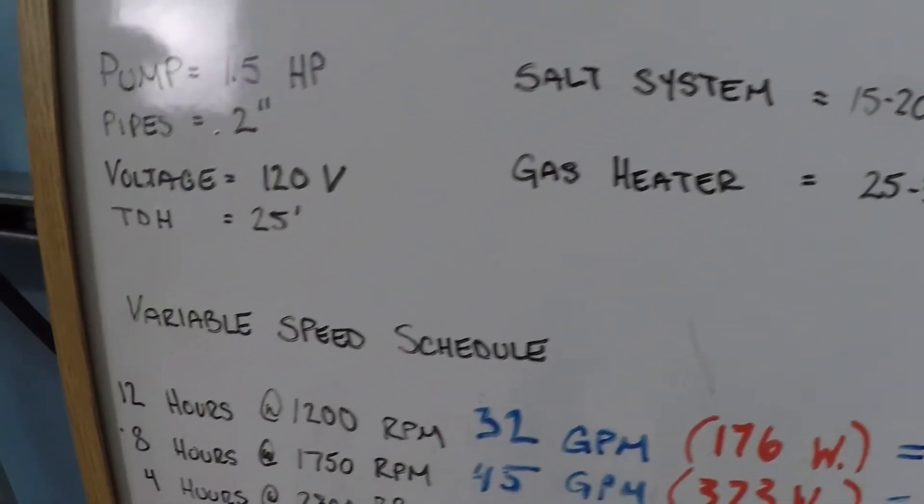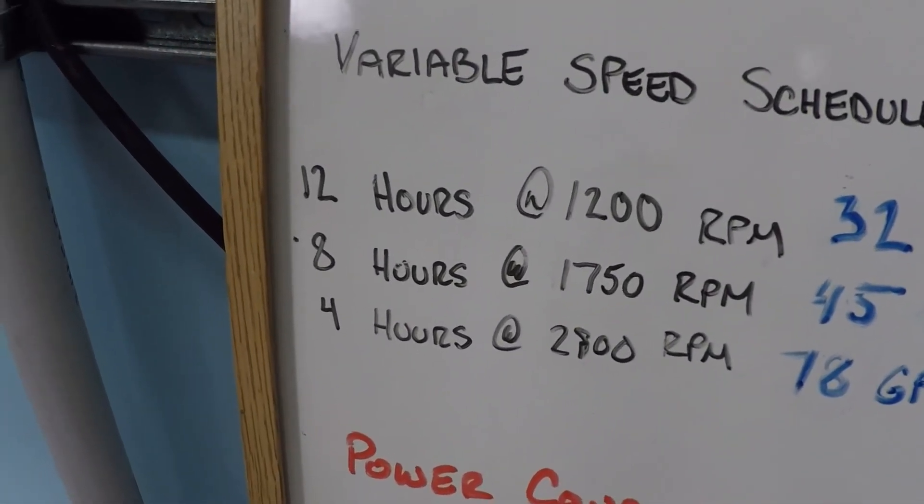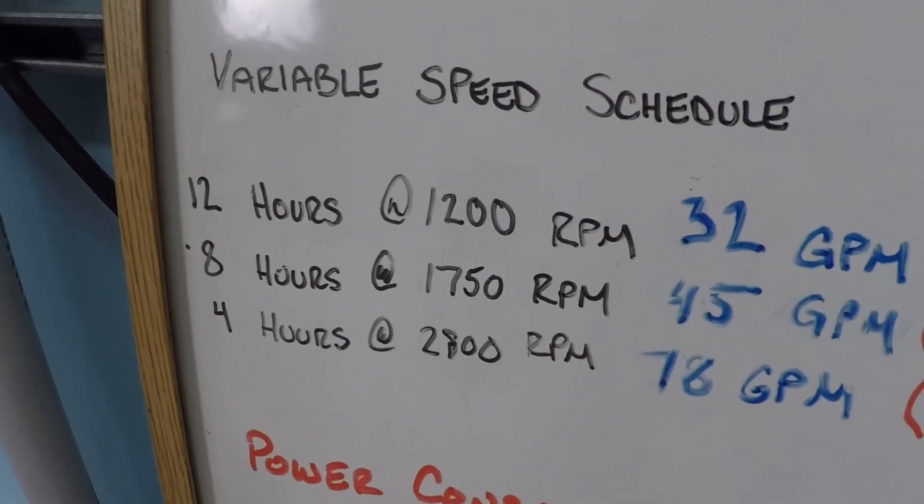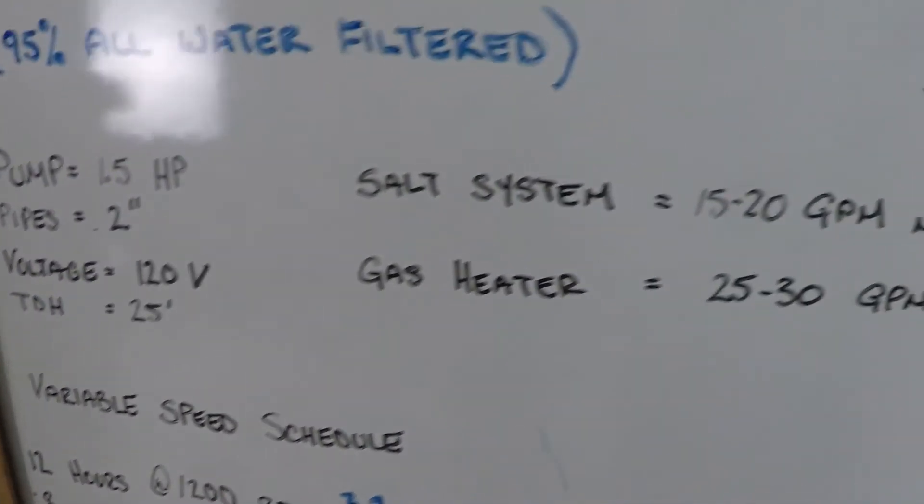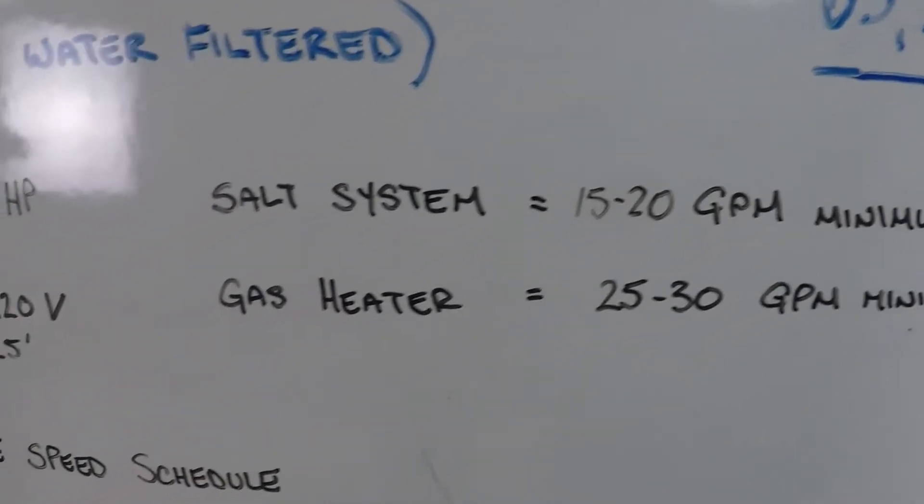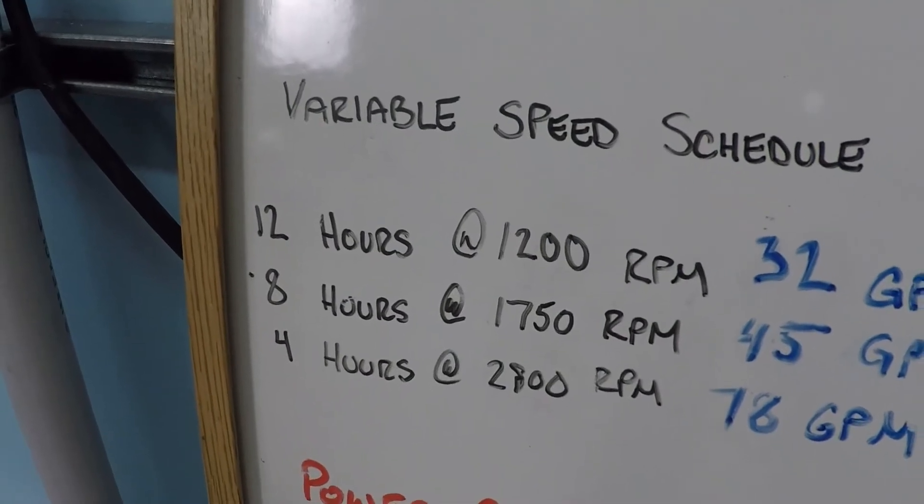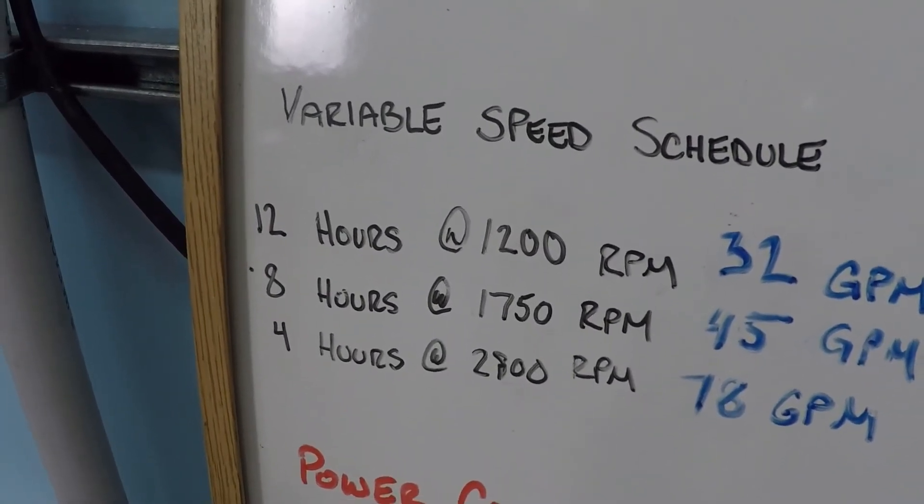And that's the idea here, is that you kind of customize this schedule of the length of time and the RPM with the parameters and peripheral devices that your pool has. Again, every swimming pool being different, there's no way to give you just one number for this, but this is a dynamic equation.